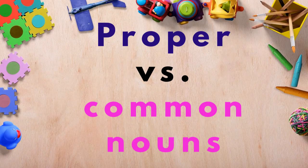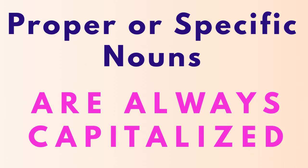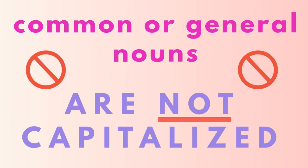Let's go over proper versus common nouns. What's the difference between both? Let's find out. So one way we can identify the difference between proper and common is that proper nouns, or specific nouns, are always capitalized. That means that common or general nouns are not capitalized, only if they start at the beginning of a sentence.